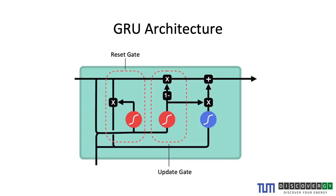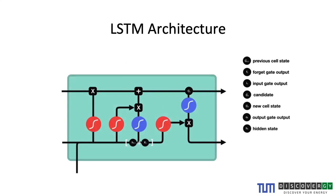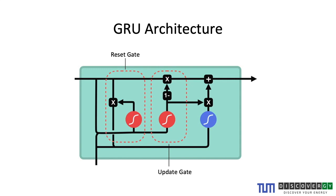A different approach to the LSTM architecture is the Gated Recurrent Unit, or GRU. This reduces the number of gates from three to two: the reset gate and the update gate. It also reduces the number of states — where the LSTM had two states (cell state and hidden state), the GRU carries only the hidden state. The reset gate works like a forget gate, determining how much of the previous values to discard, and the update gate determines how much of the current input to carry forward.